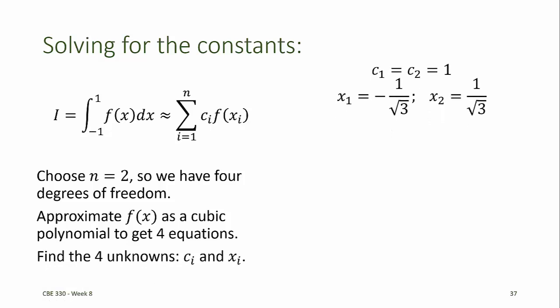In this case, it turns out that both c1 and c2 are 1, and the values that the function should be evaluated at are plus or minus 1 over the square root of 3. And note that these are completely independent of the polynomial that we're approximating, that is, they're independent of a, b, c, and d.